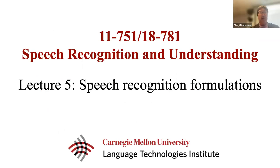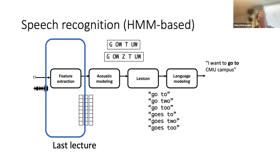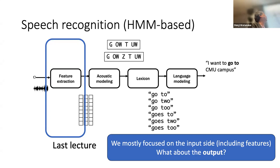Today I will talk more about the alignment problems in speech recognition. Last lecture we discussed feature extraction - whether it's end-to-end or HMM-based approaches, we are still using the log Mel filter bank feature as a very efficient input. But we also had a question about whether the output is text or phoneme, and we didn't talk much about the definition of the output.